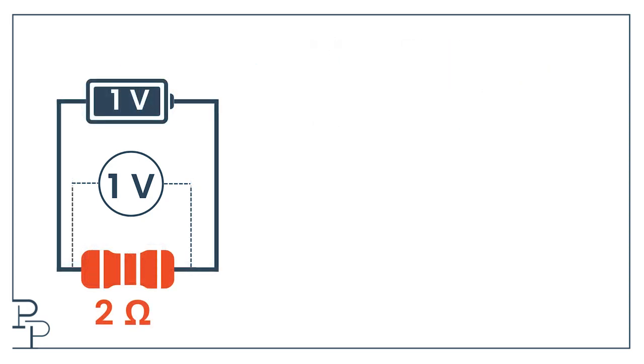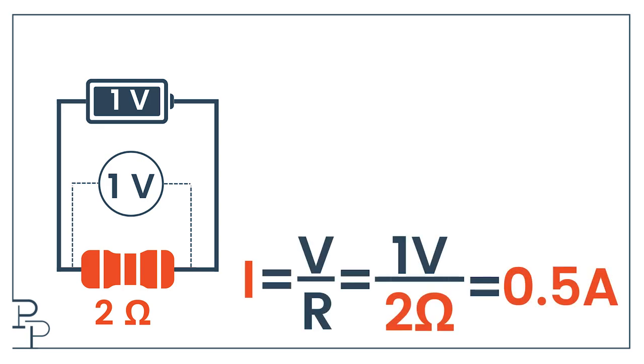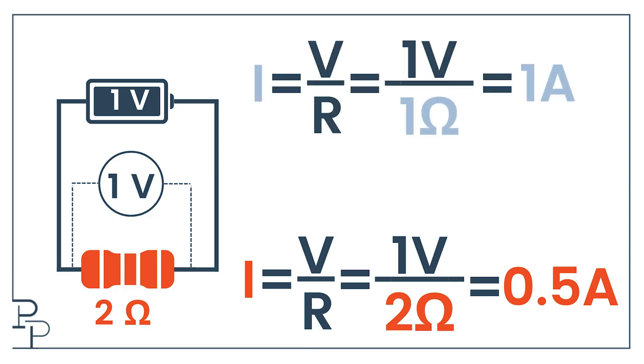Now let's take the same battery and hook it up to our 2 ohm resistor. The current flow through the resistor is 1 volt over 2 ohms, which is half an ampere. That's half the value of what we have through our 1 ohm resistor. Lower flow because of more resistance. So far so good.